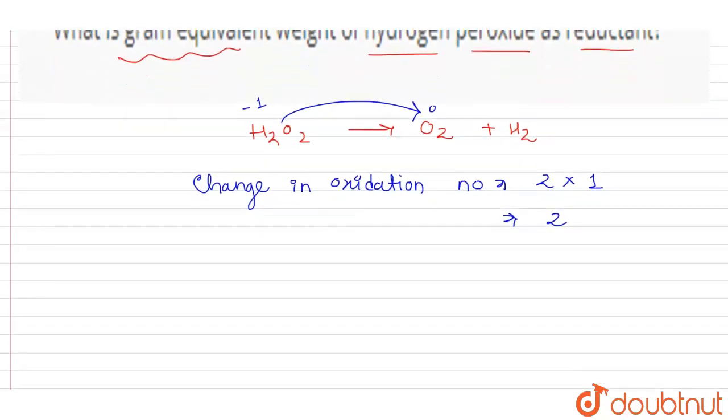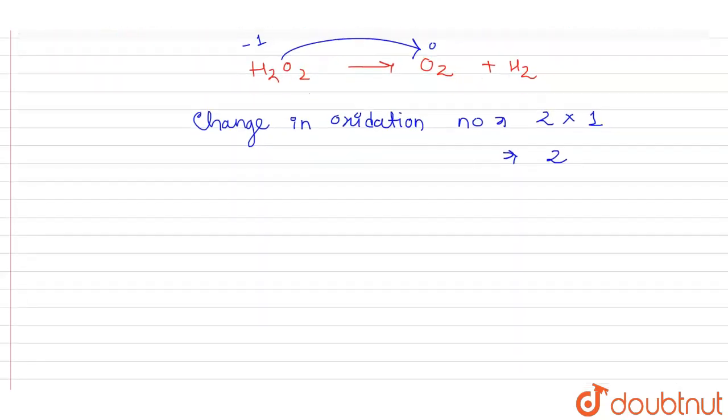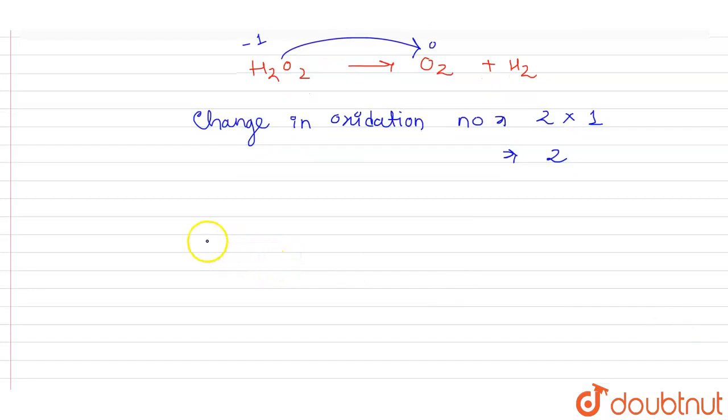Now we have to calculate the gram equivalent weight of hydrogen peroxide. The molar mass of H2O2 is 34.